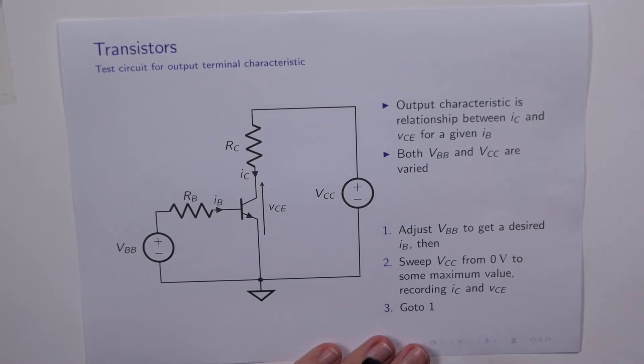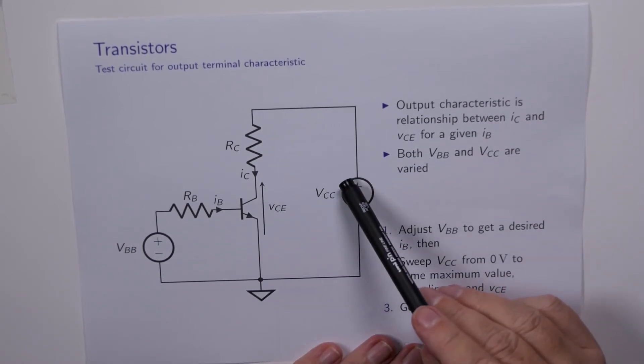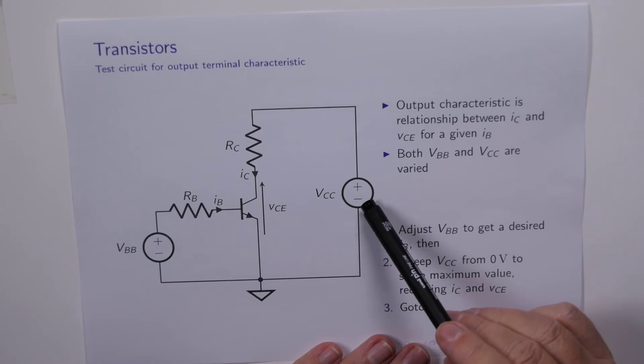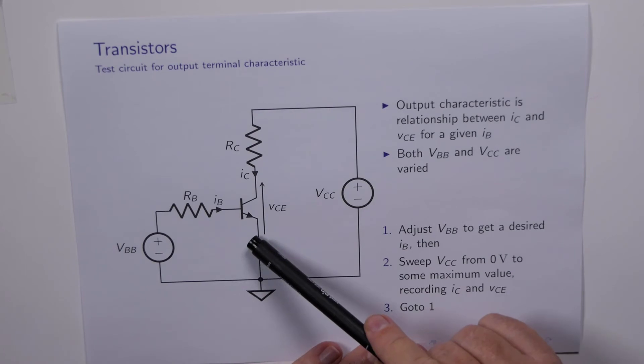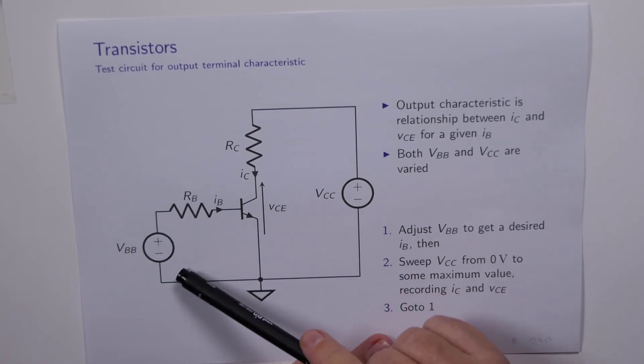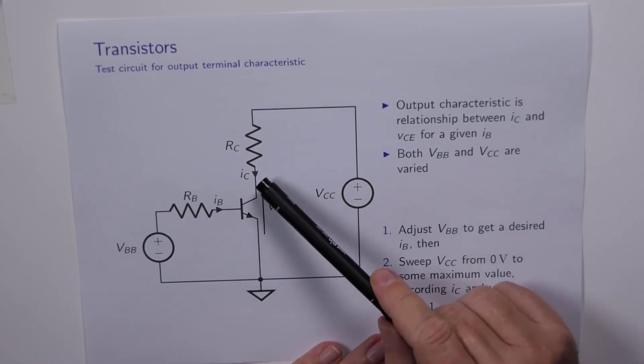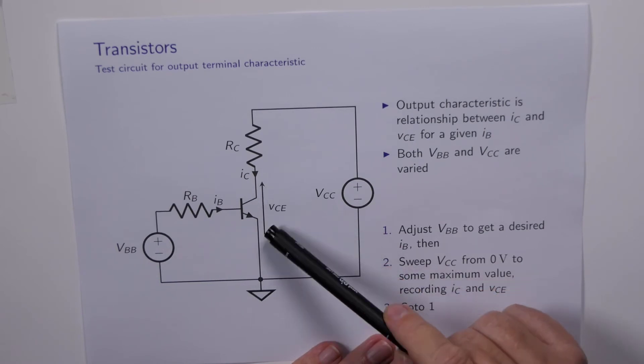Here it is. It looks just like the old one except we've replaced the fixed voltage source VCC with a variable voltage source. Neither of these voltage sources ever go negative. They're always between zero and some positive maximum value. Now we associated IB and VBE with the input to the transistor, and we're going to associate IC and VCE with the output of the transistor.